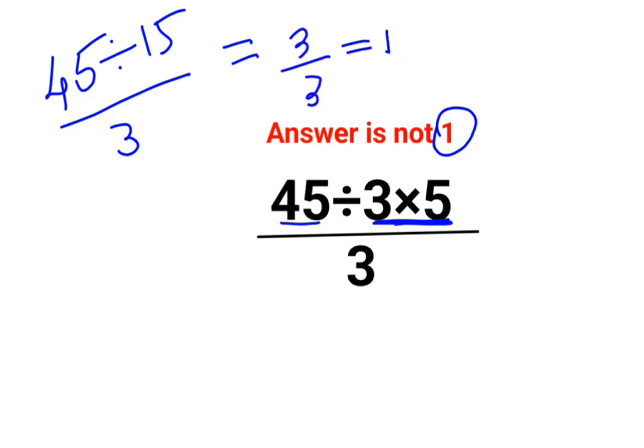The thing over here is, why have I written that answer is not 1 then? A lot of people forget that division and multiplication hold equal precedence. So in sums like these, you just need to go from left to right.